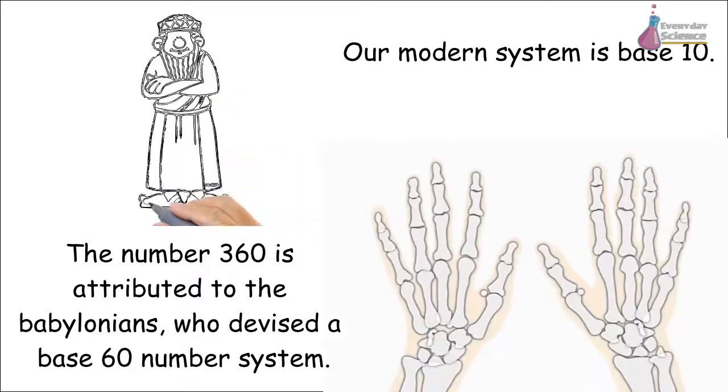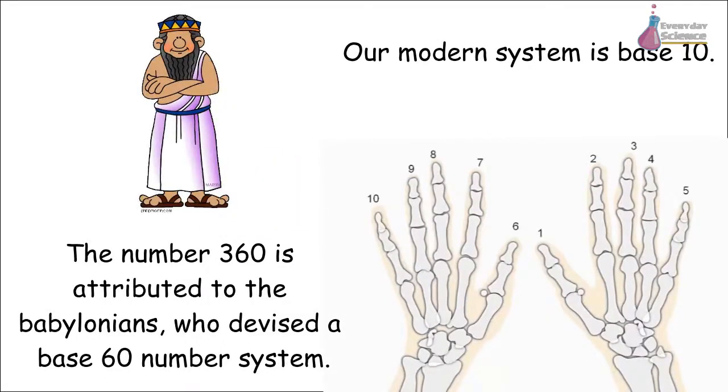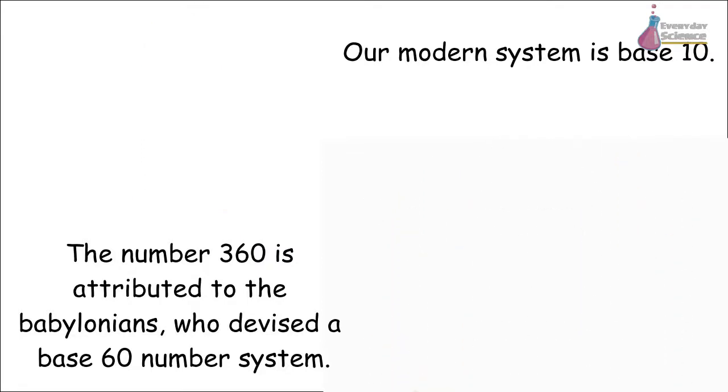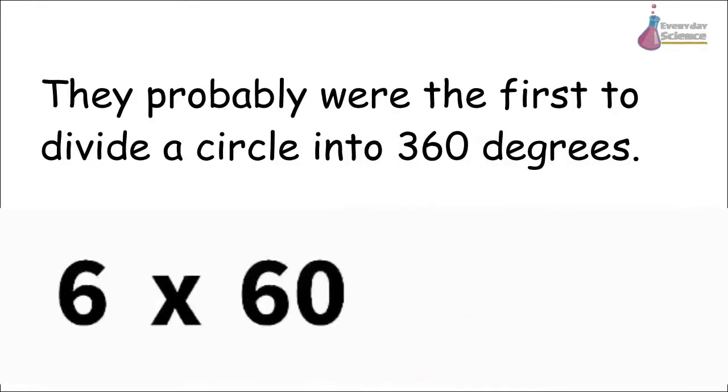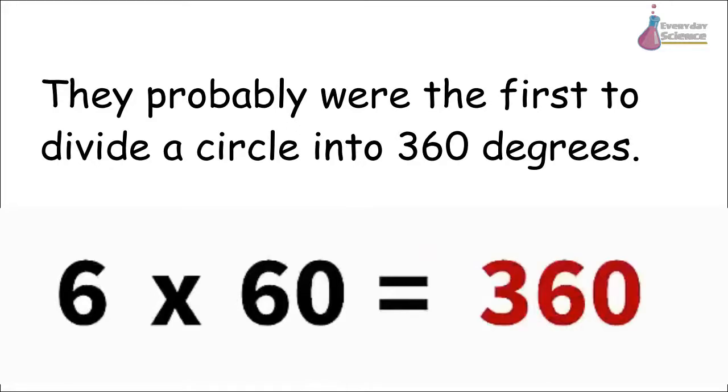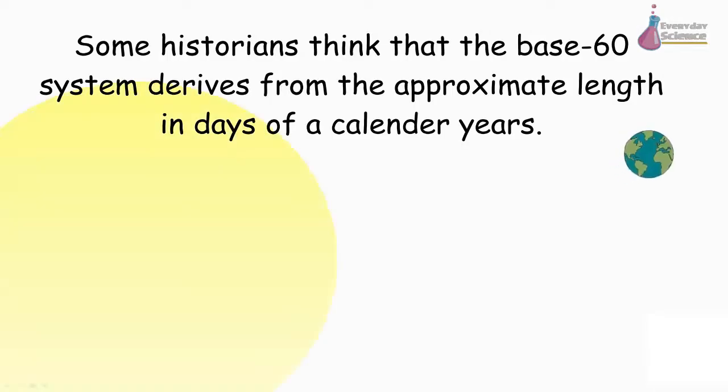Our modern system is base 10. They probably were the first to divide a circle into 360 degrees.